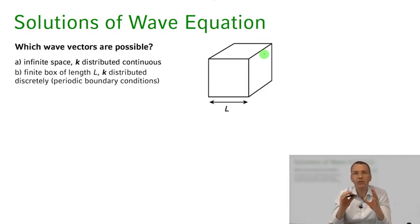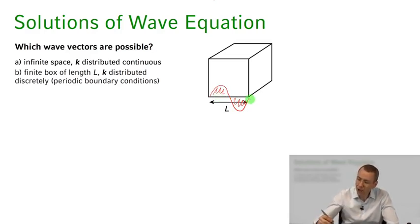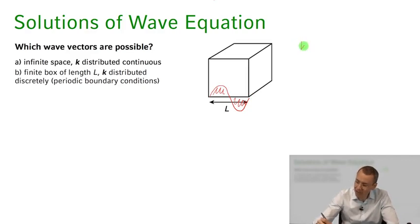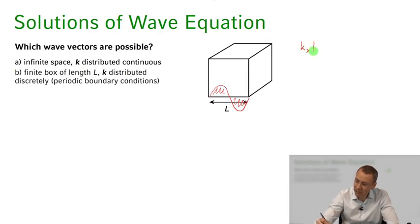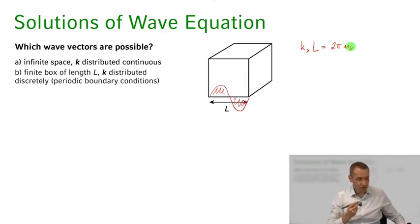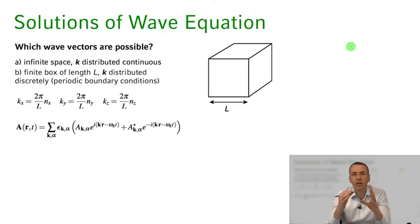This requires the phase factors of the vector potential to be the same on all opposite faces. For propagation in the x direction with box length L, we need k_x times L to equal 2π n_x, and similarly for k_y and k_z. So only discrete wave vectors are allowed, and these discrete wave vectors together with their polarization components are called the modes of the field.